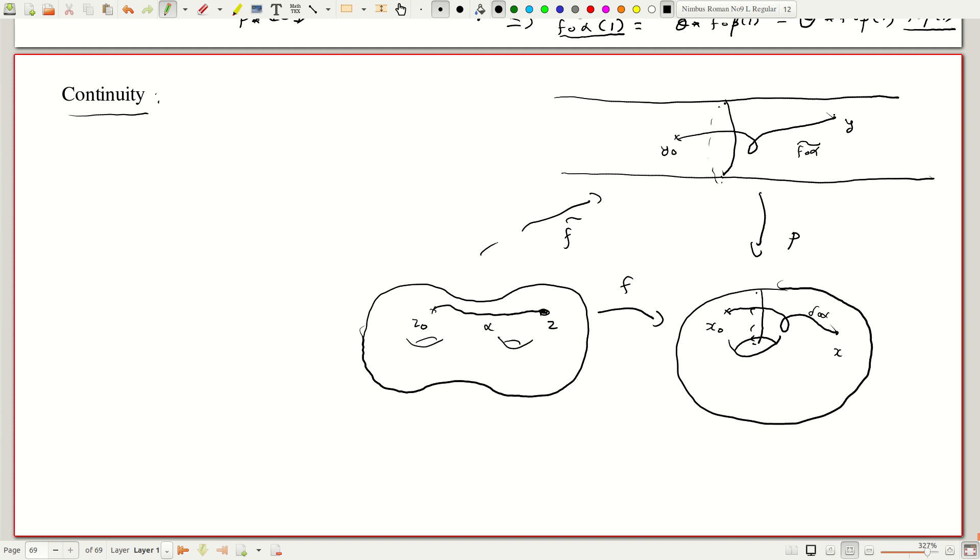So let us look at y and what do we need to prove to prove continuity? We will take a neighborhood of y. Y is, this y is actually just f tilde of the point z.